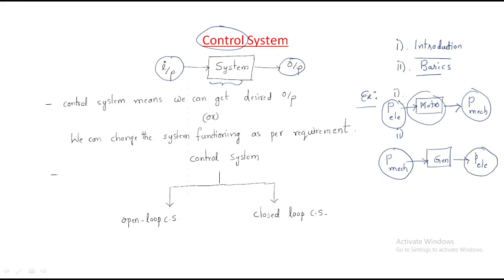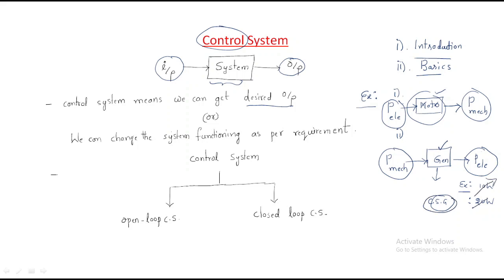The difference between a system and a control system is that in a control system we can get the desired output. For example, a normal generator might give 10 watts of power, but if it is a control system generator, our requirement might be 20 watts.